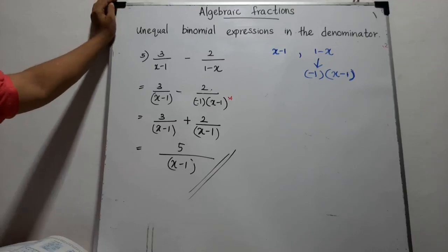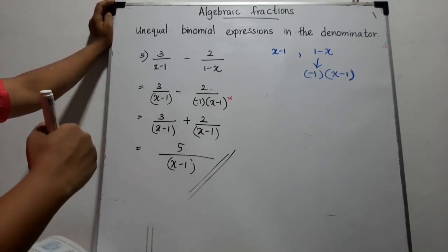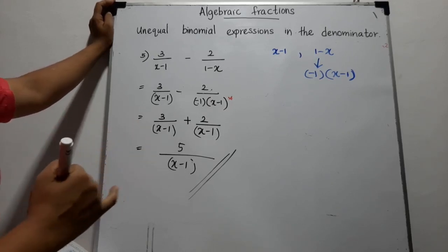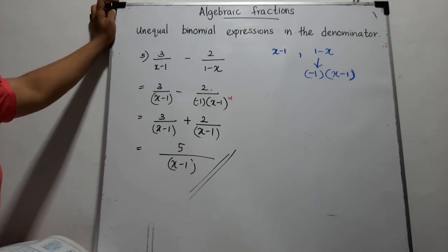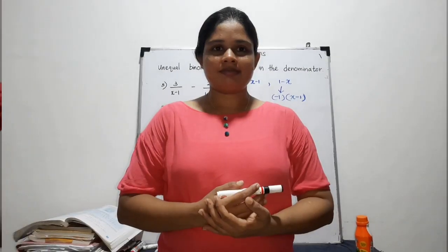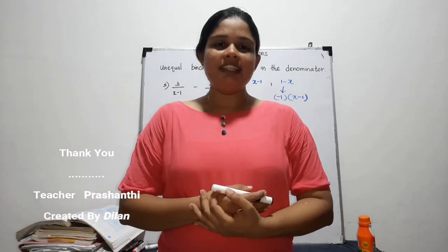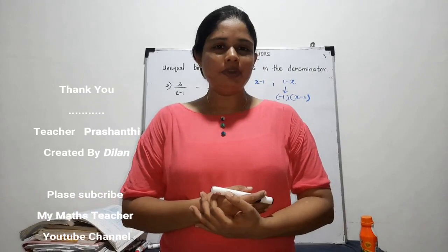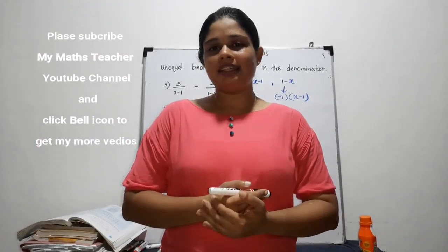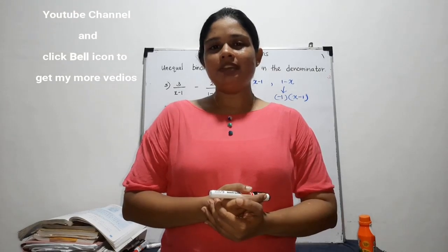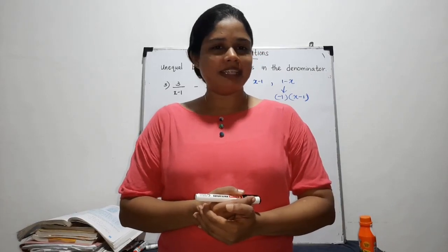I think these five examples are enough for you to gain sufficient knowledge about how to simplify algebraic fractions with unequal binomial expressions in the denominator. The lesson on algebraic fractions is now complete. If these lessons are useful to you, please subscribe to my channel and share with your friends, and click the bell icon to get future videos. Let's meet in another lesson. Goodbye, children.